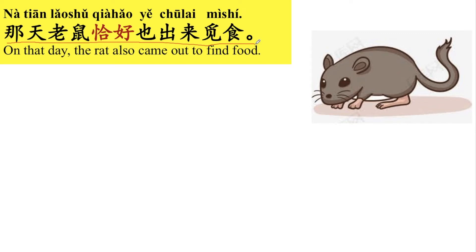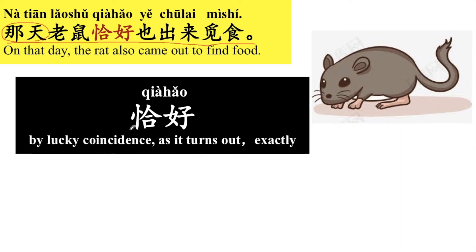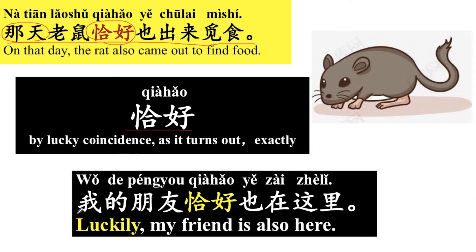那天老鼠恰好也出来觅食。那天 means that day. 恰好 means by lucky coincidence / as it turns out exactly. For example: 我的朋友恰好也在这里 — Luckily, my friend is also here. 出来 means to go out. 觅食 means to find food — we said this earlier.